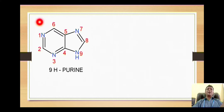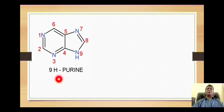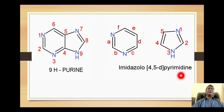After completing the numbering on pyrimidine, we go on to the imidazole ring. So after 6, this nitrogen becomes number 7, this is 8, and this is number 9. On the 9th position we have a nascent hydrogen, so this compound is called 9H-purine.